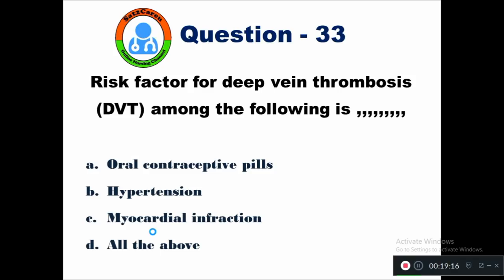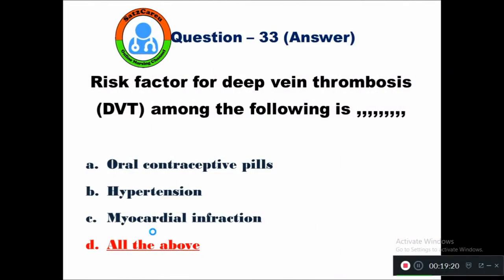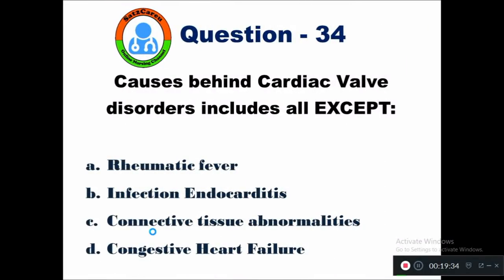Question 33: Risk factor for development of deep vein thrombosis is — option A oral contraceptive pills, B hypertension, C myocardial infarction, D none of the above. For developing deep vein thrombosis, the risk factors include oral contraceptive pills, hypertension, and myocardial infarction — all three are risk factors.